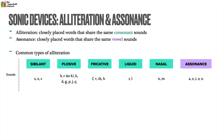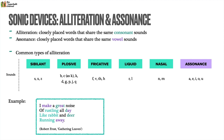Here's an example: 'I make a great noise of rustling all day like rabbit and deer running away.' We can see several types of alliteration here. Plosive alliteration in great, day, deer — the G and D sounds. Liquid alliteration in rustling, like, rabbit, and running — the L and R sounds. And then assonance in make, great, day, away. You might wonder how assonance differs from rhyme — they're not that different; assonance is perhaps one example of rhyme, though sometimes assonance wouldn't feature full rhymes — make and great share a similar vowel sound but aren't exact rhymes.